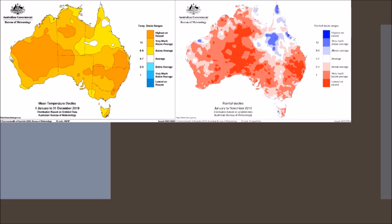Looking at the right-hand side at rainfall, you can see that most of the country had very much below-average rainfall, or in some cases the lowest on record — especially in that northern New South Wales and southern Queensland area. Lowest on record rainfall.